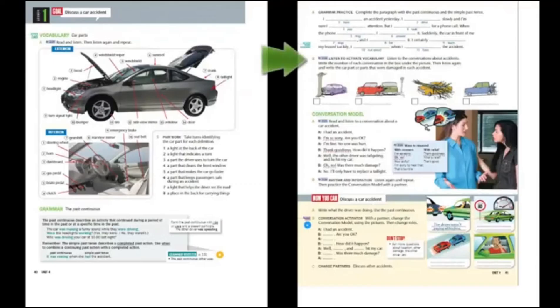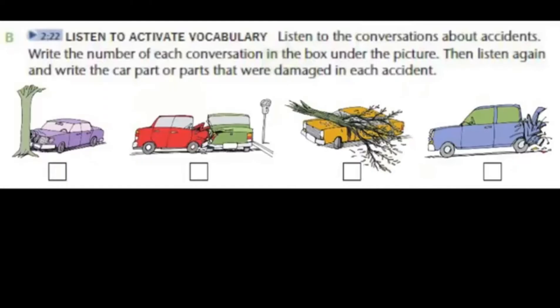Page 41, Exercise B. Listen to activate vocabulary. Listen to the conversations about accidents. Write the number of each conversation in the box under the picture, and write the car part or parts that were damaged in each accident.